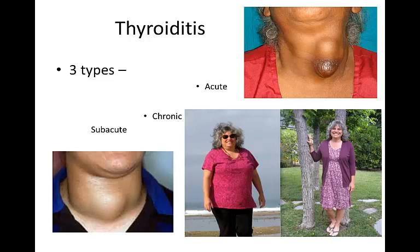Subacute thyroiditis results from a viral infection of the thyroid gland after a cold or upper respiratory infection. Manifestations include fever, chills, dysphagia, and muscle and joint pain. Pain can radiate to the ears and jaw. The thyroid gland feels hard and enlarged on palpation.